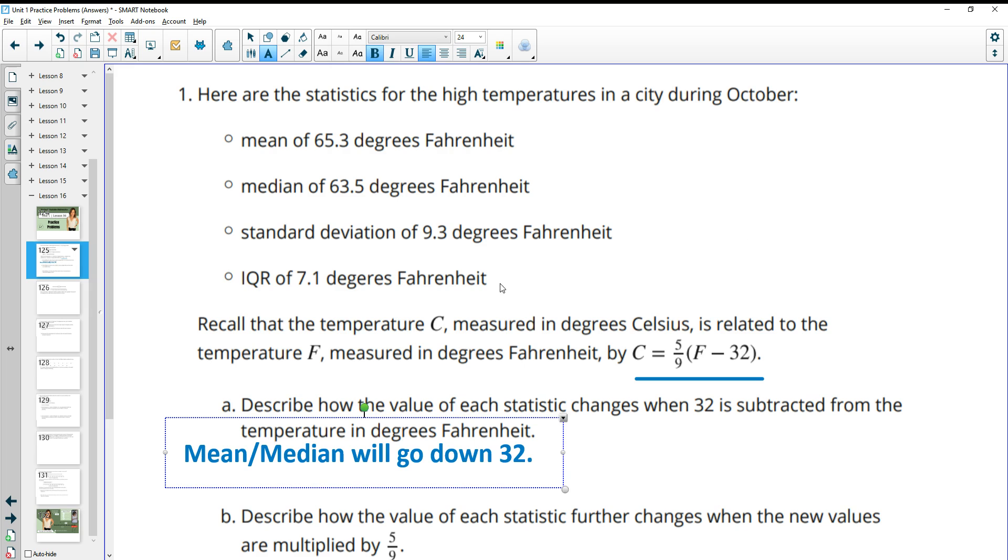Then when we add and subtract, that just kind of moves these numbers up and down the number line, 32, so in this case down. So everything is going to move down 32, so it's just going to shift everything. So our variability isn't going to change. So the standard deviation and the IQR will not be impacted or will not change.